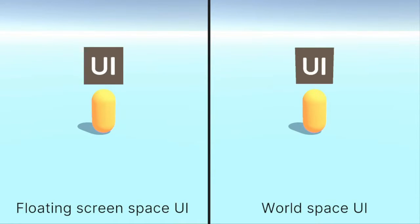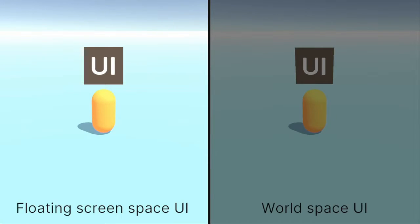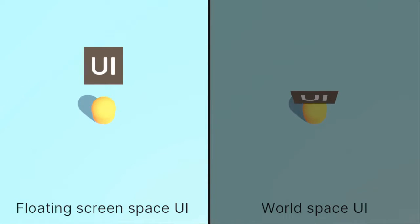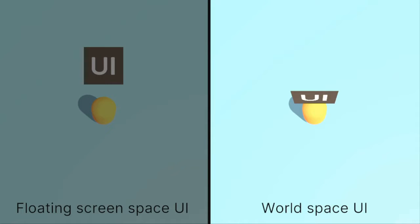Next, staying above the capsule. Using FloatingScreenSpaceUI, above means upwards on the screen. If I tilt the camera down, you can see what I mean. On the left, the UI now has a horizontal offset in 3D and not towards the sky anymore — the offset is applied relative to the camera's orientation. On the right, in WorldSpaceUI, above will still point towards the sky, no matter how we move the camera.